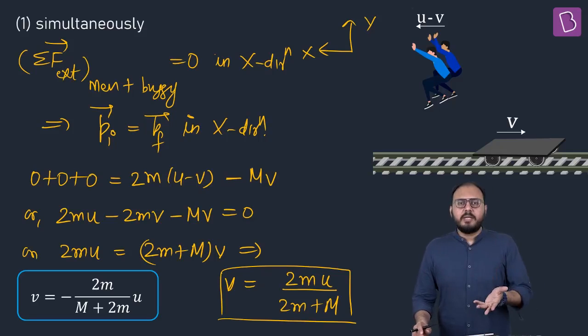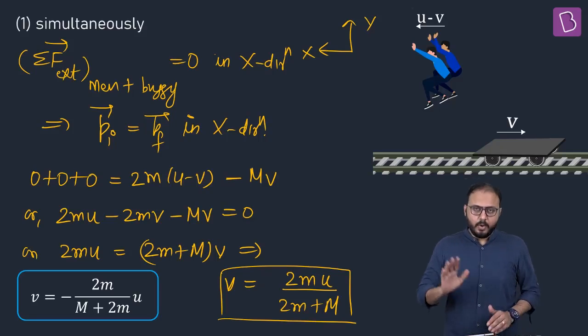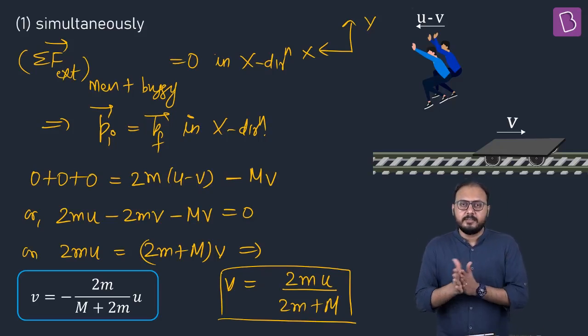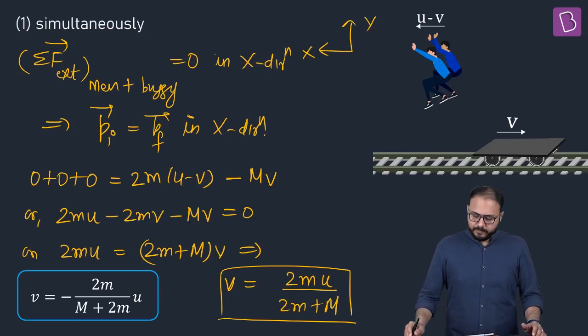Good. Next problem is easy problem, lengthy problem because one after another. So, two times you have to apply. Let's see who gets this. One after another. You have to find out the velocity, not intermediate. When both the men have jumped off. Want to check out?